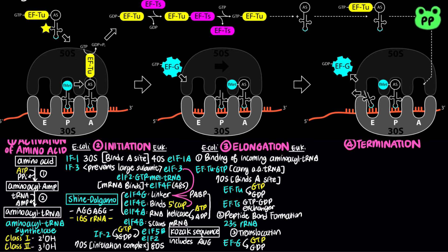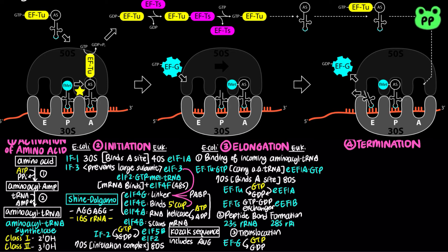In eukaryotic elongation, GTP-bound eukaryotic elongation factor 1A (eEF1A) serves as the carrier of incoming aminoacyl tRNA, binding to the 80S ribosome. GTP hydrolysis by eEF1A triggers dissociation from the 80S ribosome, and eukaryotic elongation factor 1B serves as a GTP-GDP exchanger, restoring the GTP-bound eEF1A complex. Next, the 28S rRNA within the 60S large subunit contains peptidyltransferase activity, which catalyzes the formation of a peptide bond between the incoming amino acid and the existing peptidyl-tRNA.